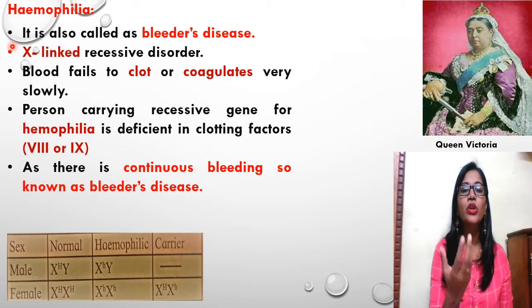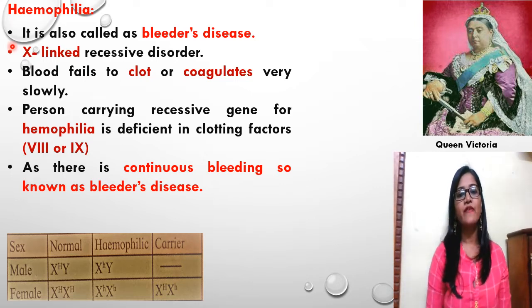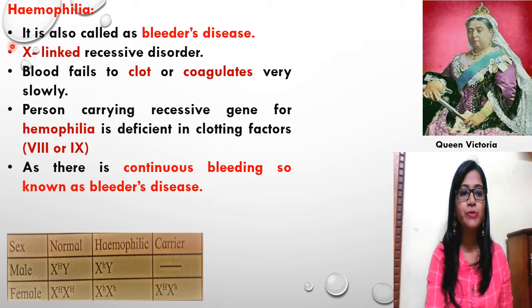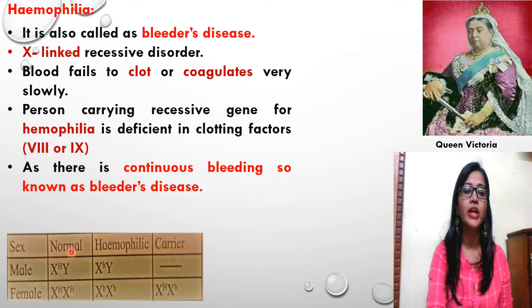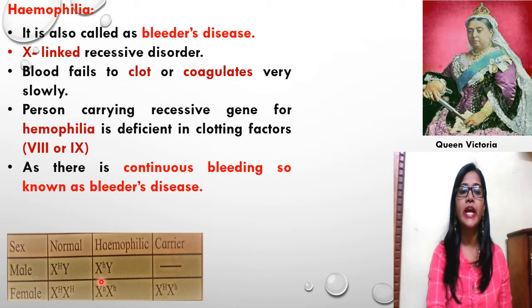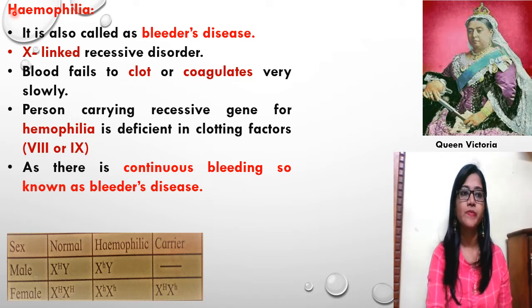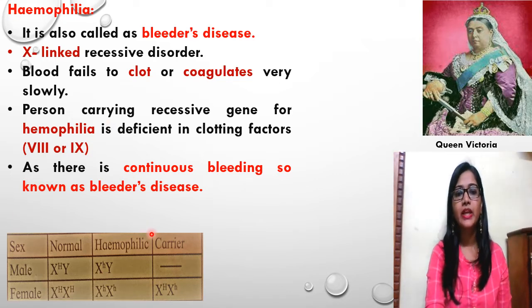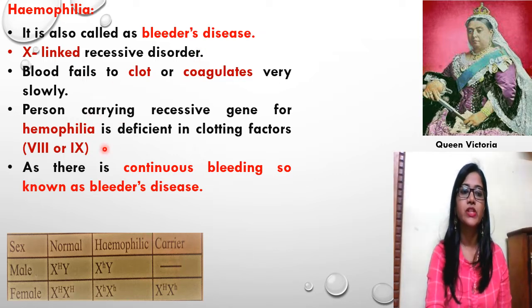So that X-linked recessive gene gets expressed in males, and males have Haemophilia. Women suffer only when both X chromosomes carry recessive alleles. Now looking at genotypes: if a male is normal, his X chromosome carries capital H with a Y. If that male is Haemophilic, the X chromosome carries small h — the recessive gene. The male cannot be a carrier since it is an X-linked recessive disorder.